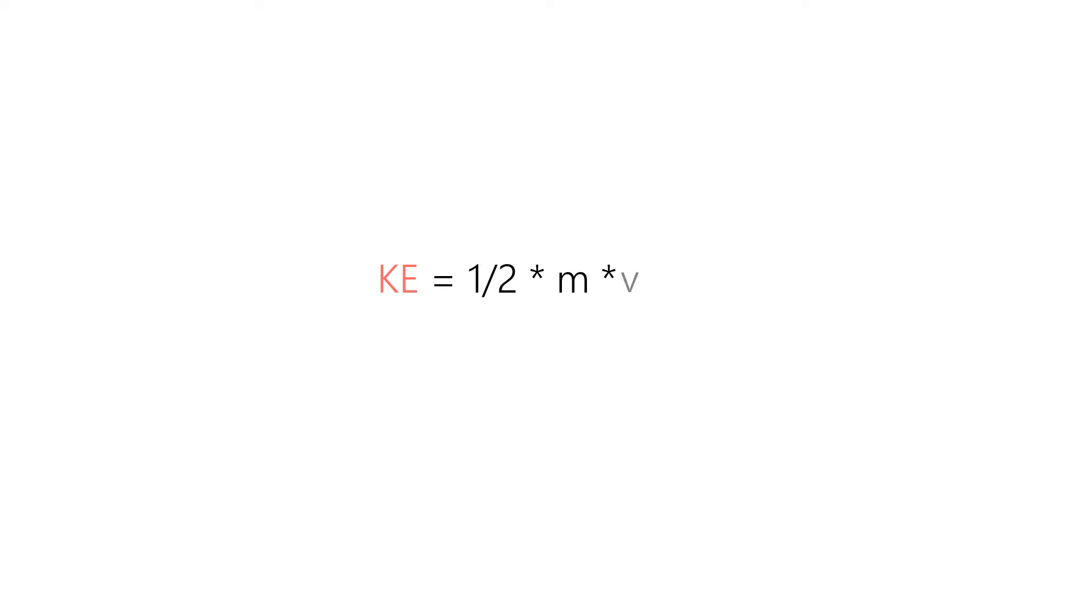So the kinetic energy of an object is associated with its mass and velocity. And if you observe this kinetic energy formula closely, you will see that the velocity has a lot more influence on the kinetic energy than mass, simply because it changes as the square of velocity.